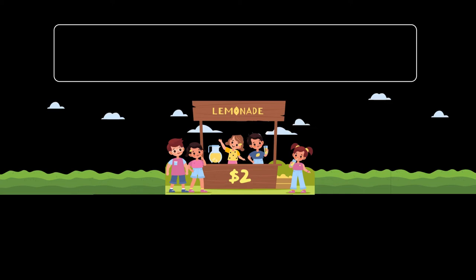Welcome back. In this video we are going to discuss the concept of price elasticity of demand, simply known as PED. The marketing department uses the elasticity tool to help understand the quantity demanded of their product — how much demand is expected and what the forecasted sales are.